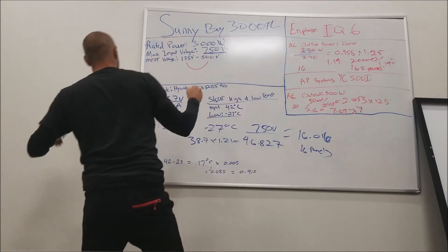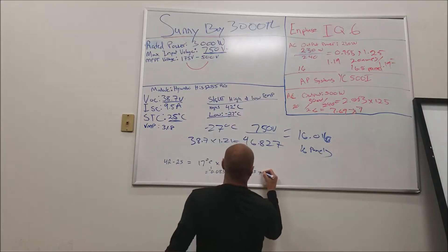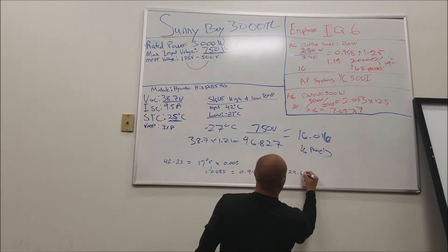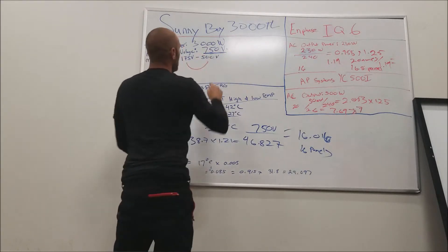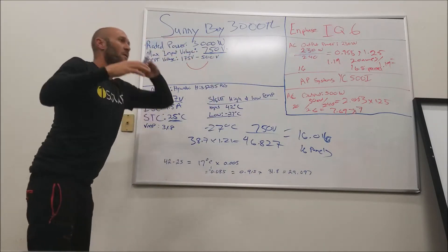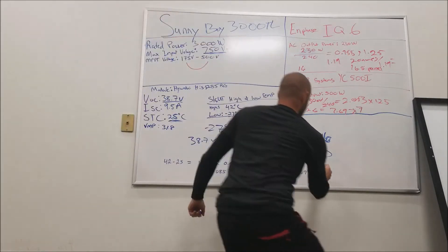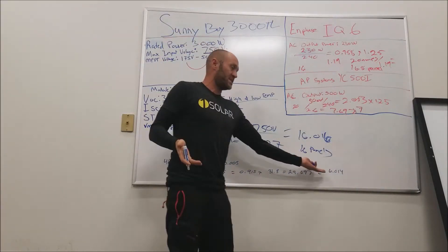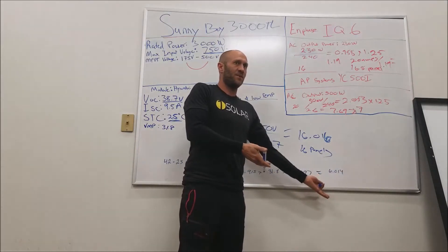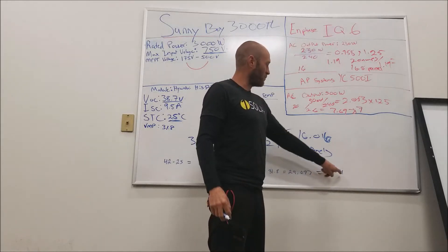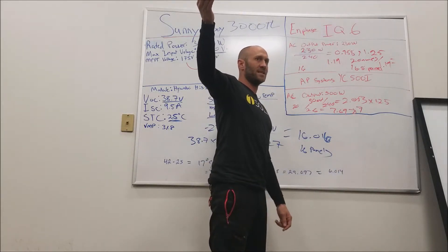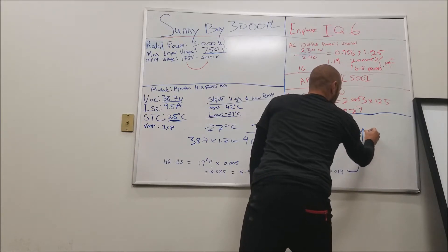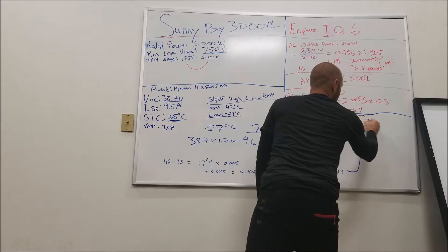Take that 0.915 and multiply by your VMP of 31.8 volts: 31.8 times 0.915 equals 29.097 volts. Now divide the minimum MPPT voltage of 175 by 29.097. That gives you 6.014. Even though the calculator shows 6.014, that 0.014 makes it higher than six — so you cannot do six panels. You have to round up to seven.